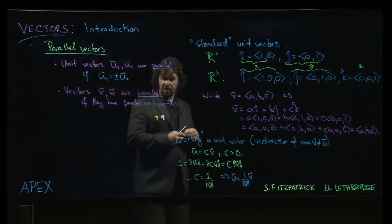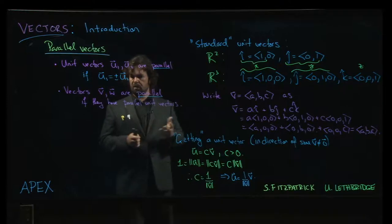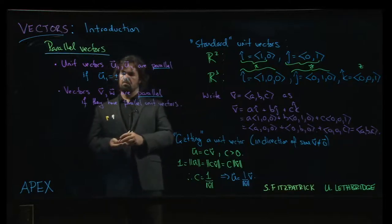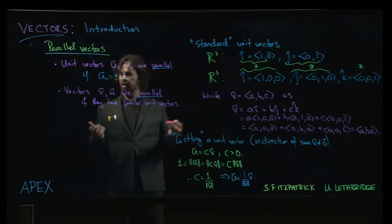Now, I guess sort of buried in this definition is that if these vectors are going to have parallel unit vectors, then they can't be zero because a zero vector doesn't have a unit vector. Okay, so that's one way to do it.